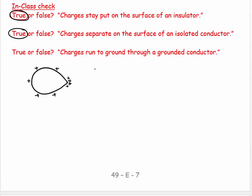And then true or false charges run to ground through a grounded conductor. And yes, if I have a conductor, I actually show this going to ground by that symbol. And what happens is if I happen to put a charge on here, it basically is going to run to ground.